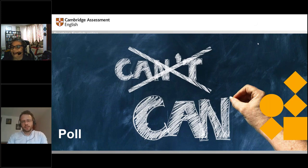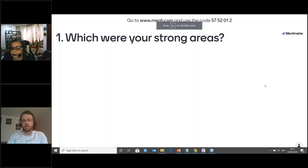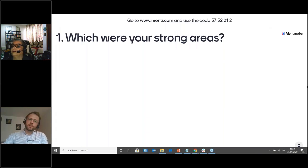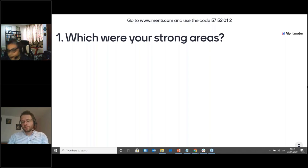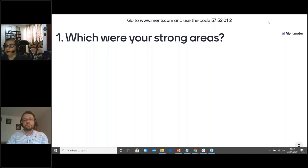We're going to ask you two questions. For those that are new today — most of you will have already been here — if you go to menti.com, preferably on your mobile phones, and put in the code 5 7 5 2 0 1 2. So the first question: what were your strong areas out of those six when you did the self-assessment on the Digital Teacher? Be honest with yourself — nobody will see your name.